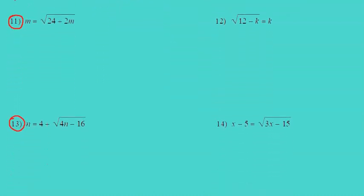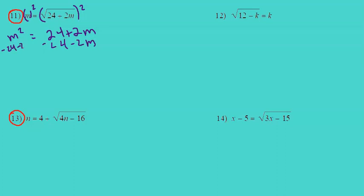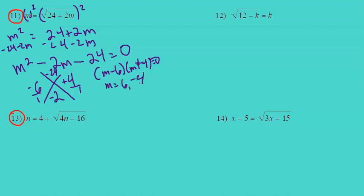Let's look at number 11. m equals the square root of 24 plus 2m. Exponentiate each side by 2, so m squared equals 24 plus 2m. Move everything to one side: m squared minus 2m minus 24 equals 0. Factor this — a times c is negative 24, b is negative 2. The two numbers that work are negative 6 and positive 4. Divide by a to get m minus 6 times m plus 4 equals 0. So the two possible solutions are m equals 6 and m equals negative 4.